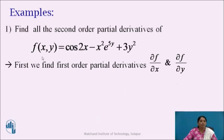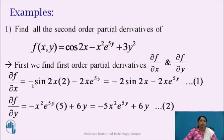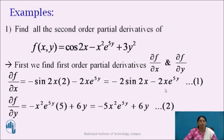We get ∂f/∂x: the derivative of cos(2x) is −sin(2x) × 2. Now e^(5y) is treated as constant, so e^(5y) remains and the derivative of x² is 2x, giving −2x·e^(5y). And 3y² is treated as constant, so its derivative is 0. We get ∂f/∂x = −2sin(2x) − 2x·e^(5y). We call this equation 1.